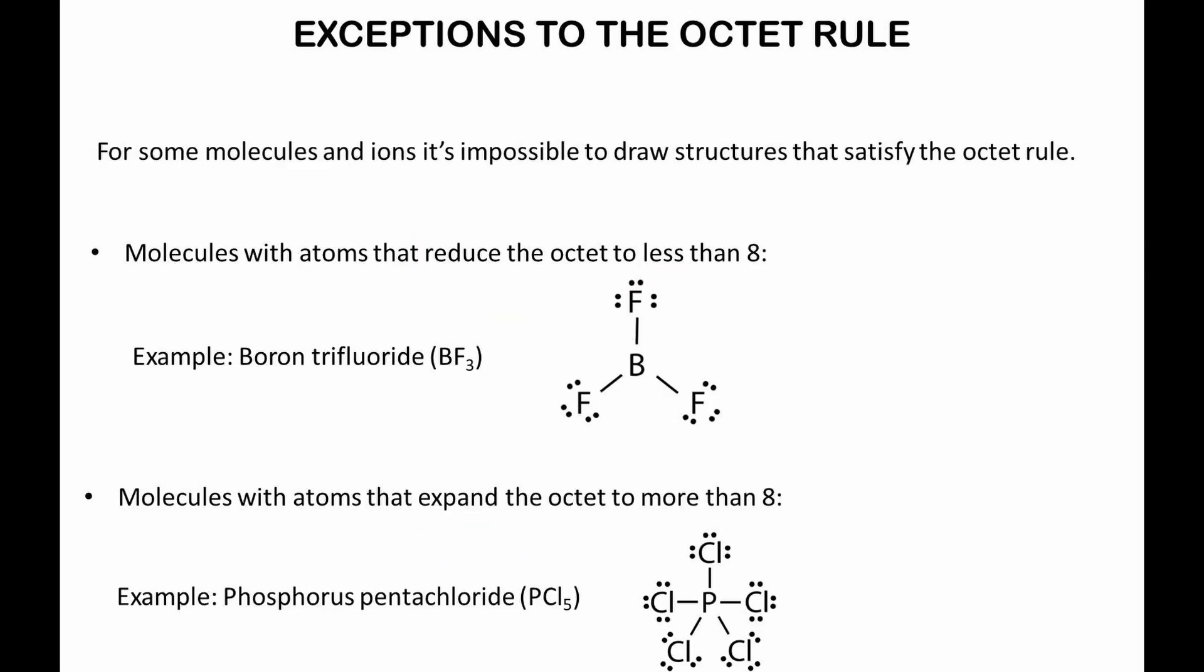For some molecules and ions, it's impossible to draw structures that satisfy the octet rule. For example, the octet rule does not work for molecules whose total number of valence electrons is an odd number. Nitrogen dioxide is an example. There are molecules with atoms that reduce the octet to less than 8, like boron trifluoride. And there are molecules with atoms that expand the octet to more than 8, phosphorus pentachloride is an example.